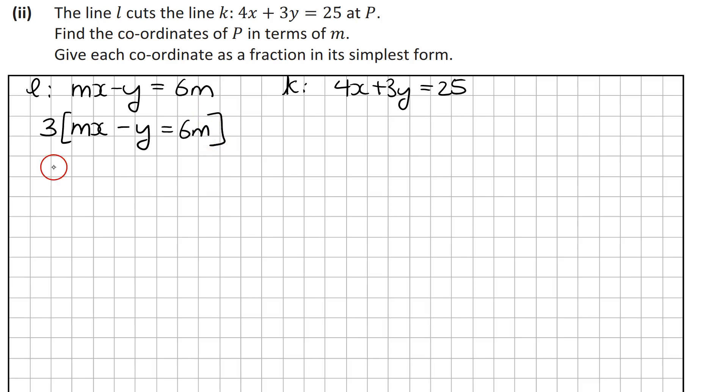So that will give me 3mx minus 3y equals 18m, and then putting the other one underneath that.